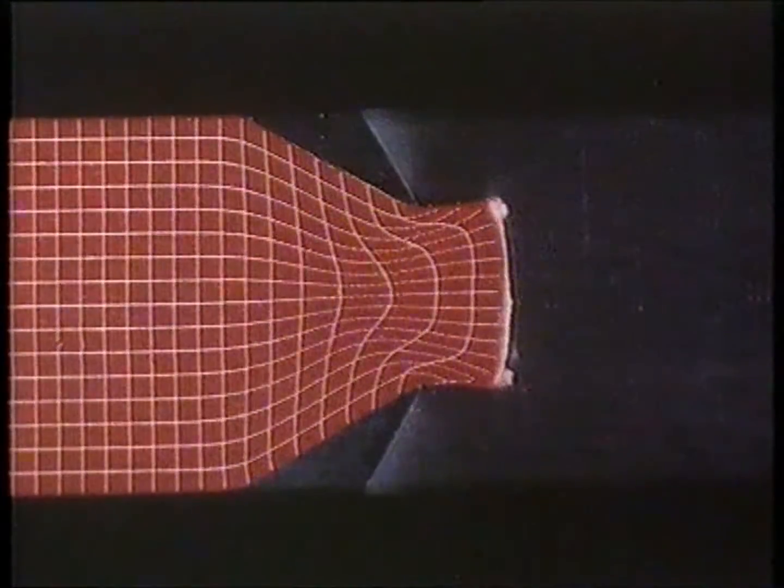In order to compare the results from upper bound theory with our physical model, we here extrude plasticine through a 30 degree taper. The reduction is 50%. The deformation takes place under plain strain conditions between plates of steel and glass. A five millimetre square grid has been painted on the red plasticine. The plasticine is a scale model of actual metals and its properties can be chosen so as to resemble those of various metals.